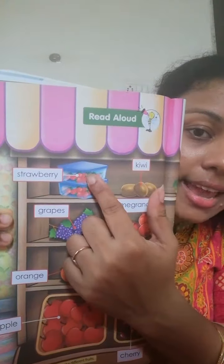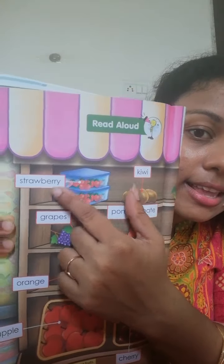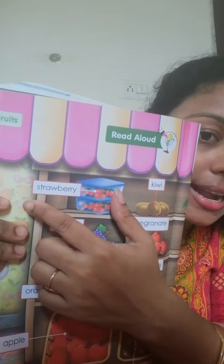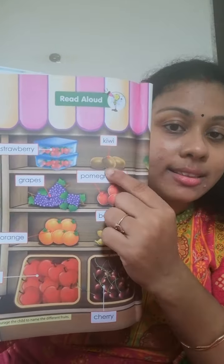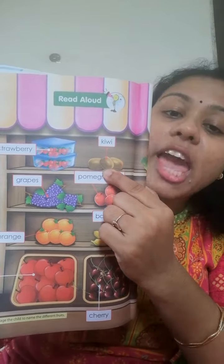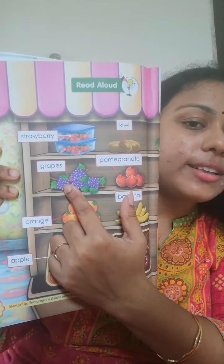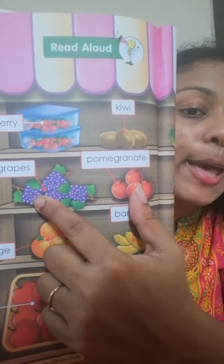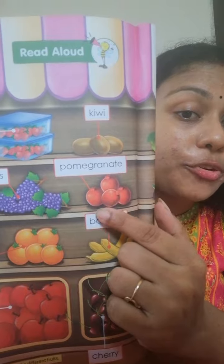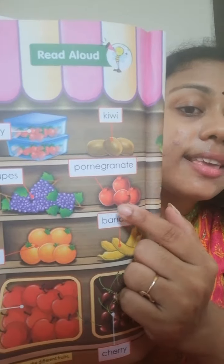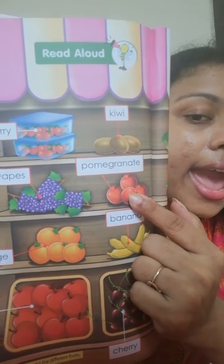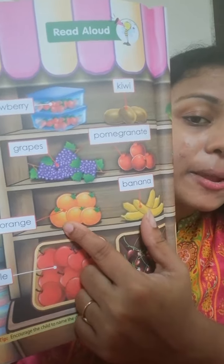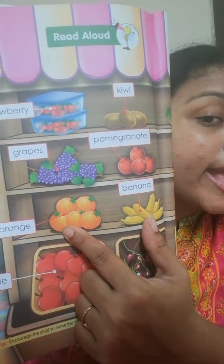This is strawberry. This is kiwi. Which fruit is this? Grapes. Which fruit is this? This is pomegranate. Which fruit is this? Orange.